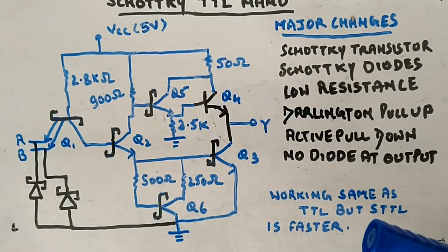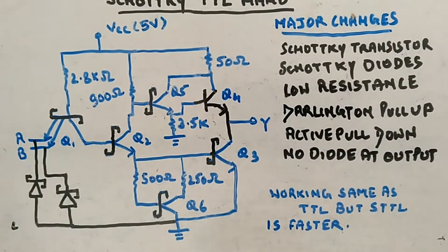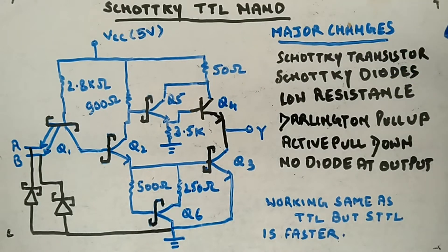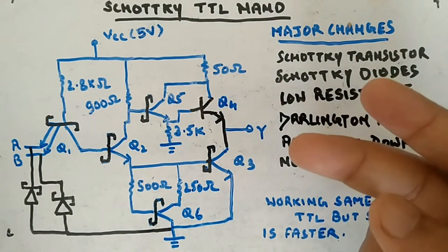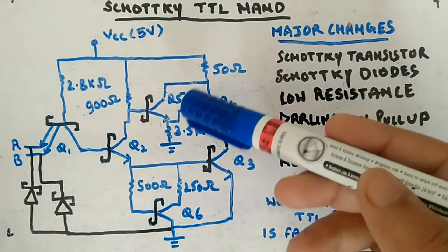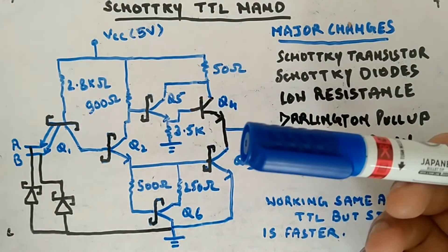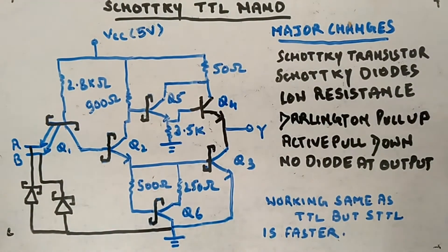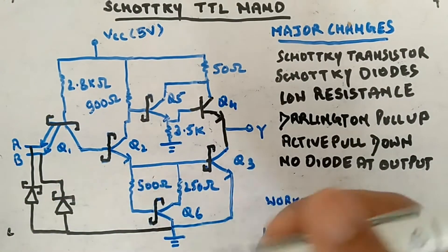The working will be similar to TTL, but Schottky TTL will be much faster — that's the benefit. Now, why are we getting benefits from introducing these major changes? Schottky transistors are used because they will never go into saturation; they only toggle between active and cutoff. So we have eliminated the storage time — the time required to remove charges from the base of the transistor. Hence we are getting much higher switching speed.